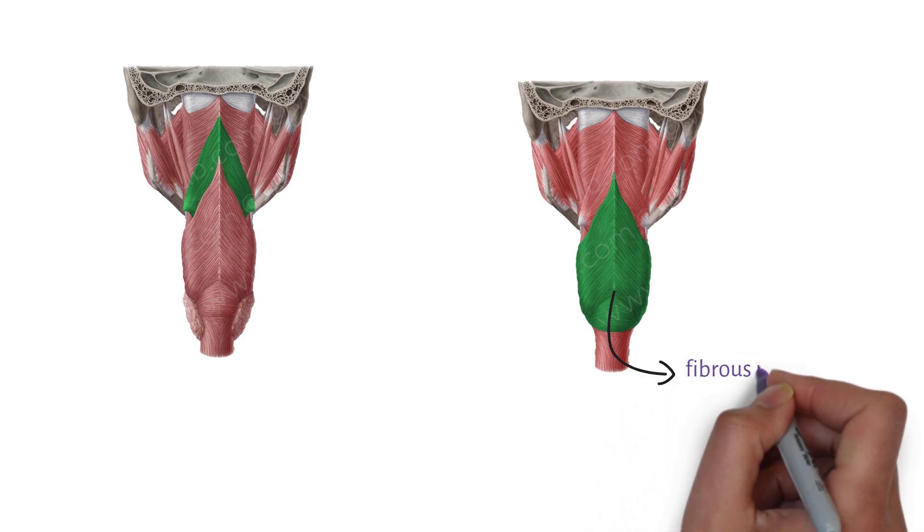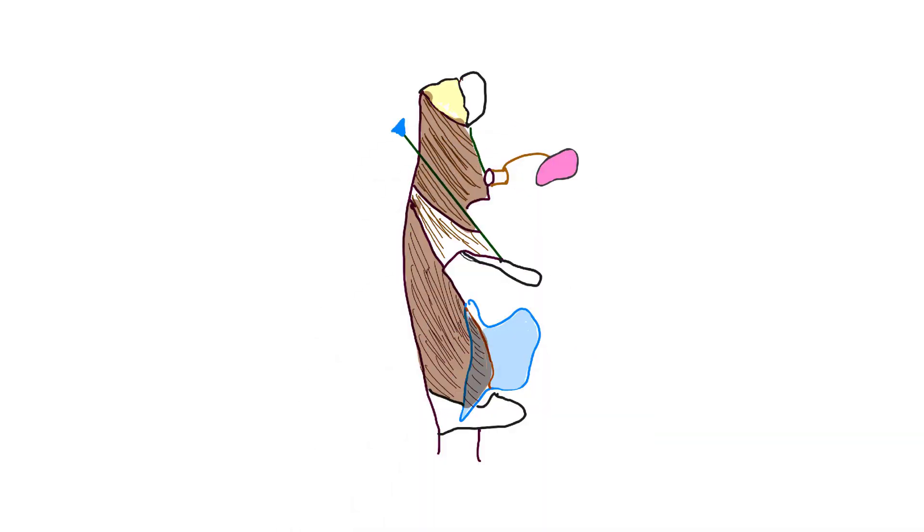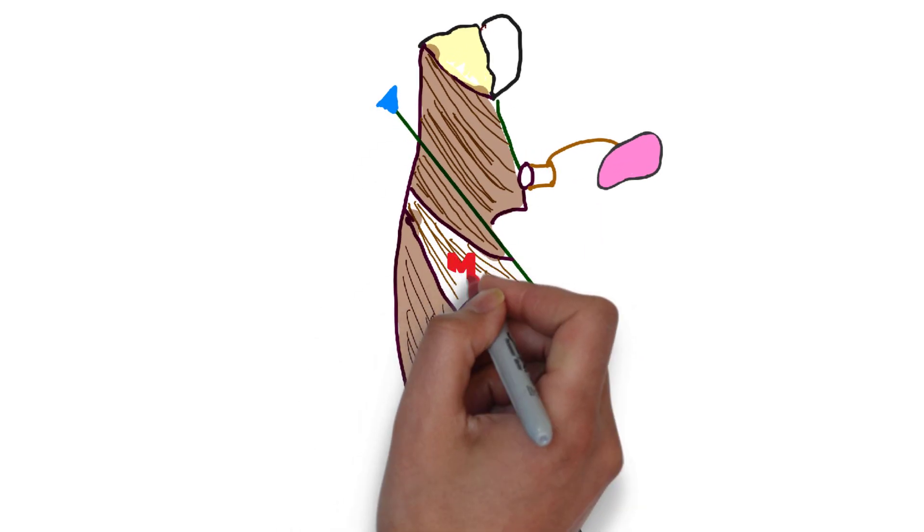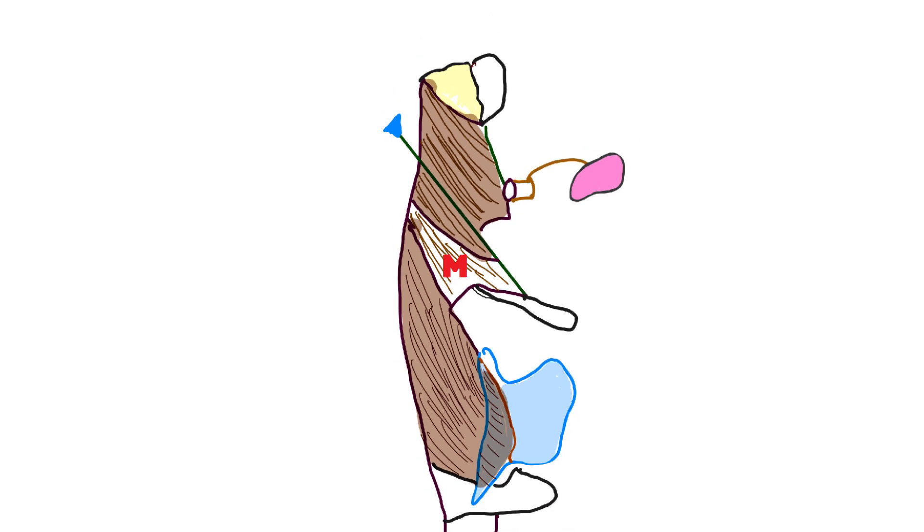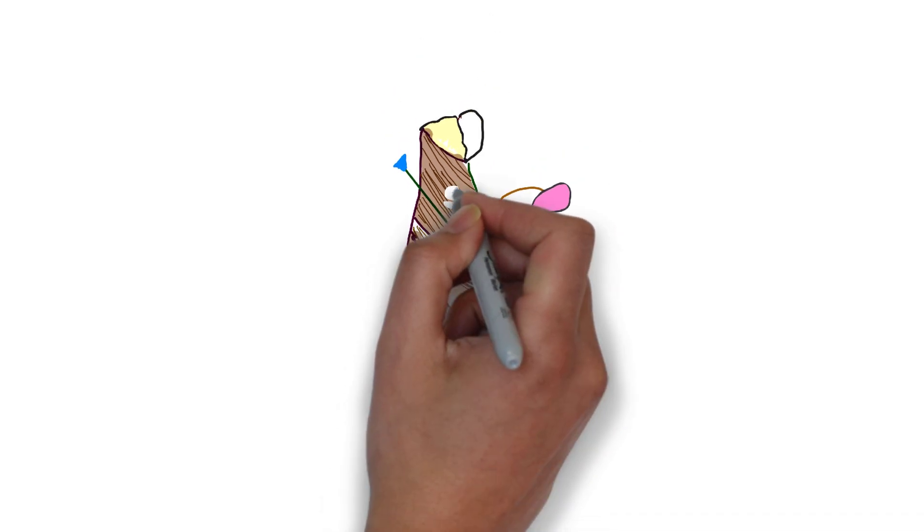The arrangement of muscle can be seen from this image. Here, the middle constrictor is overlapped by the superior constrictor. And in turn, the middle one is overlapped by inferior constrictor. Have a look at this diagram.